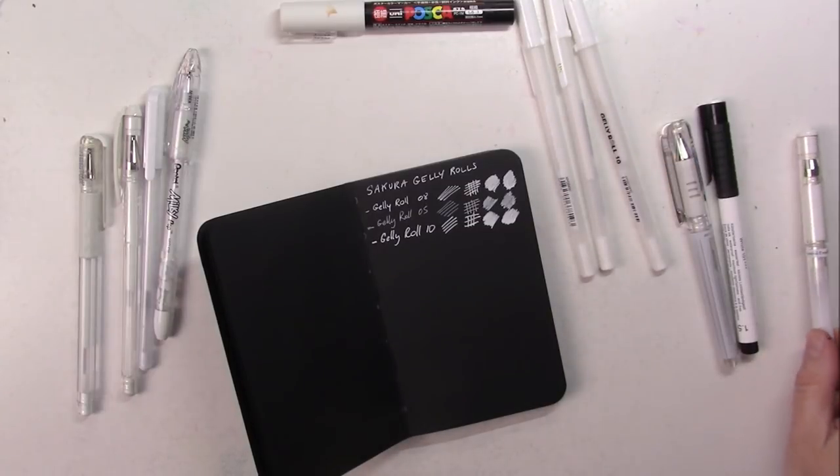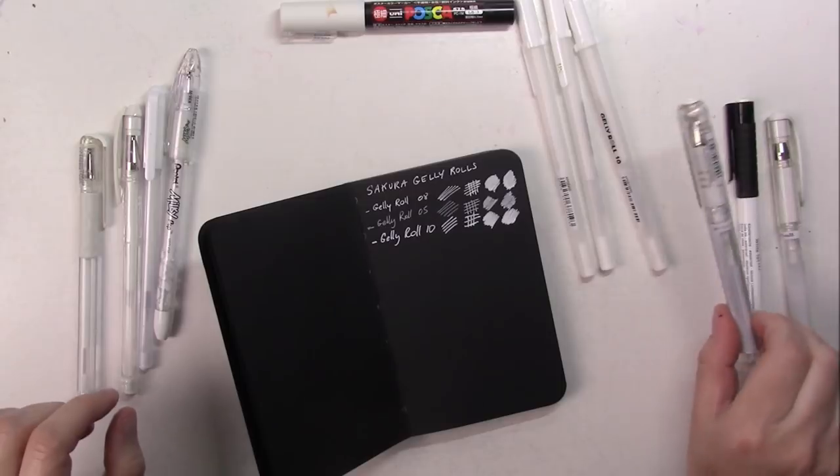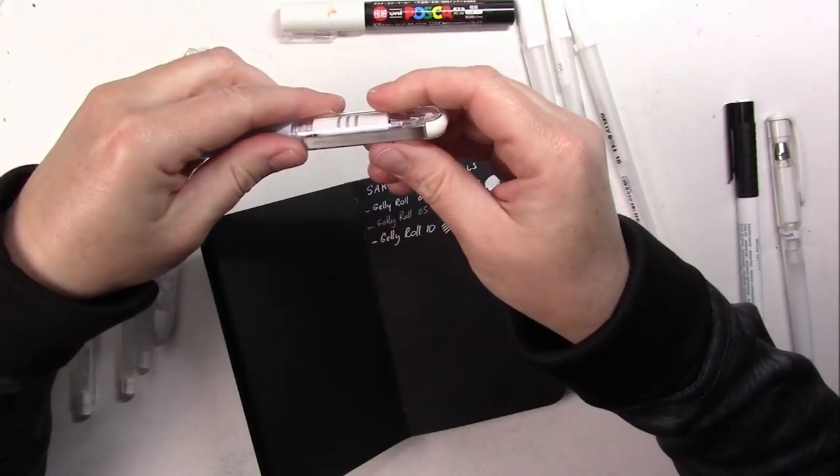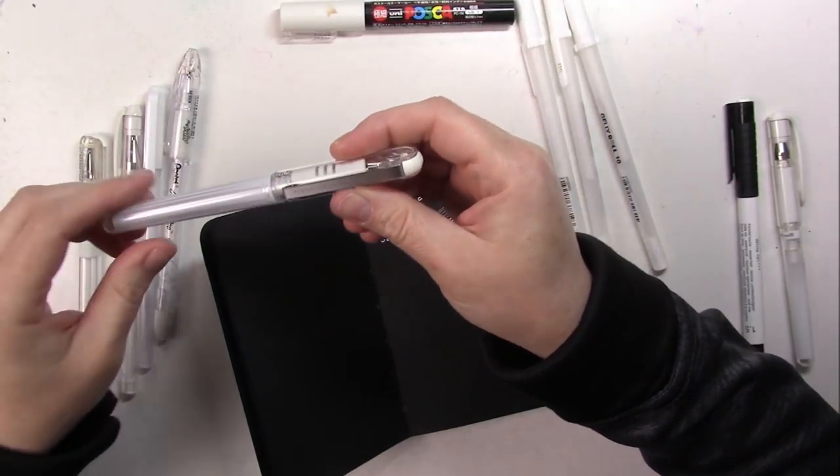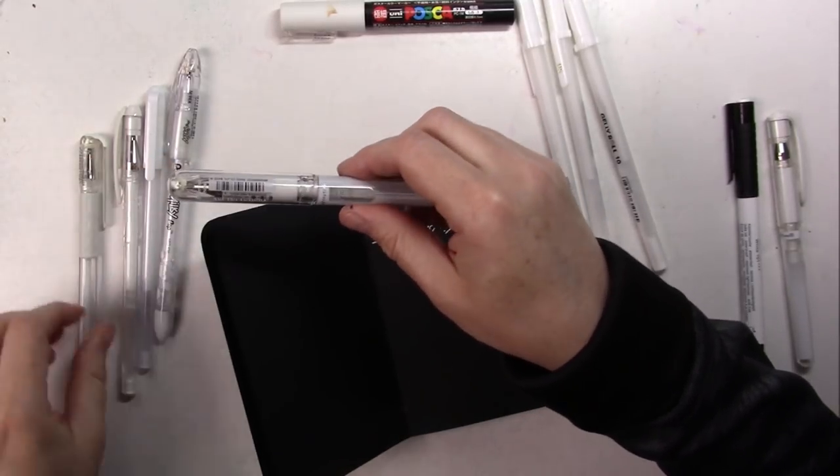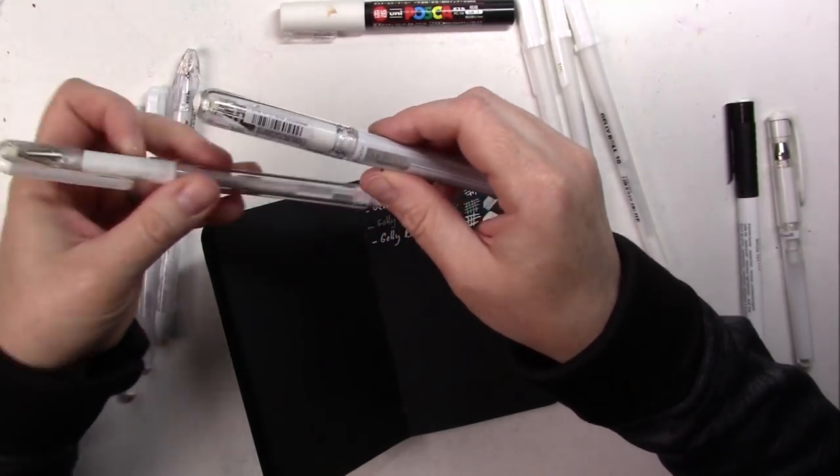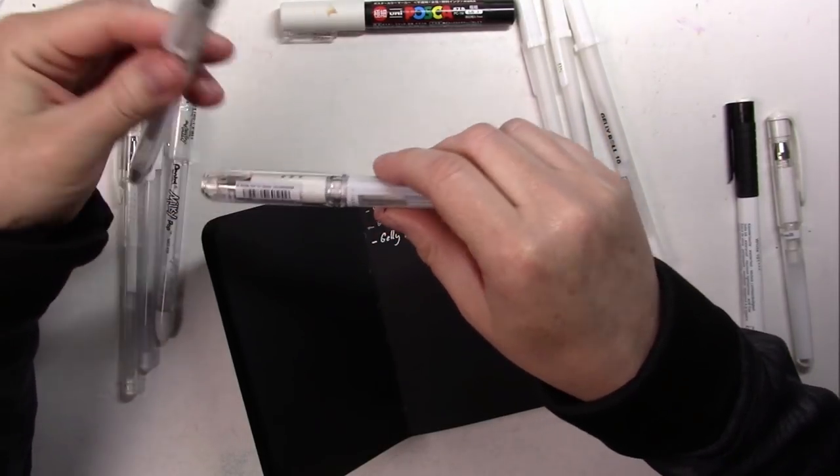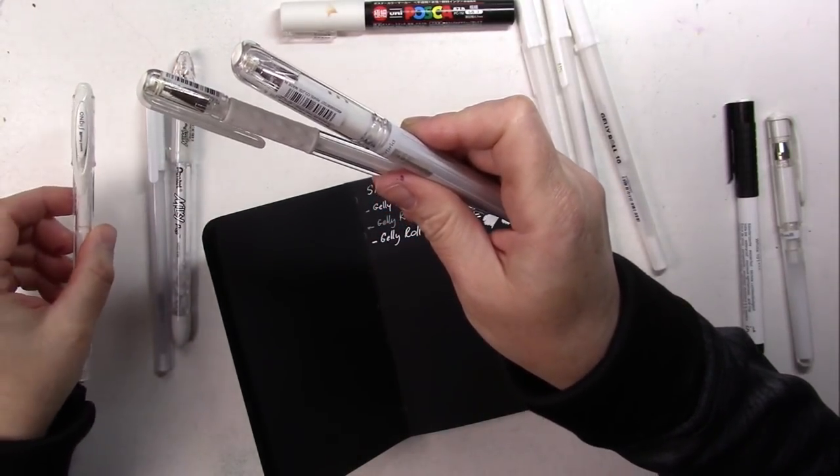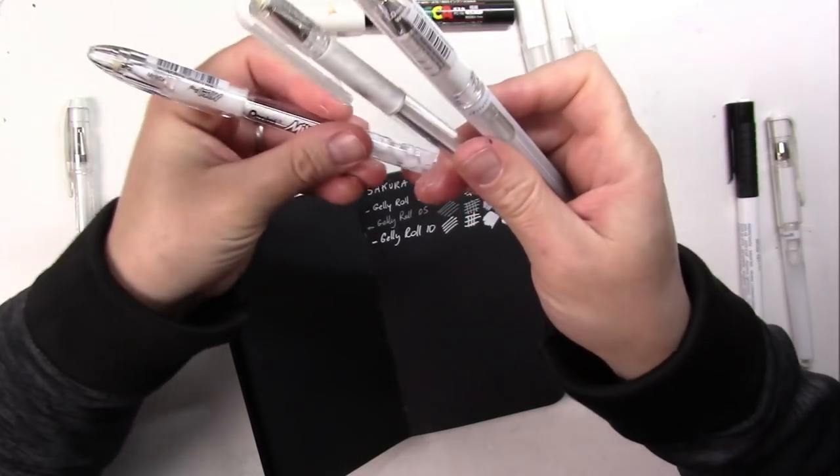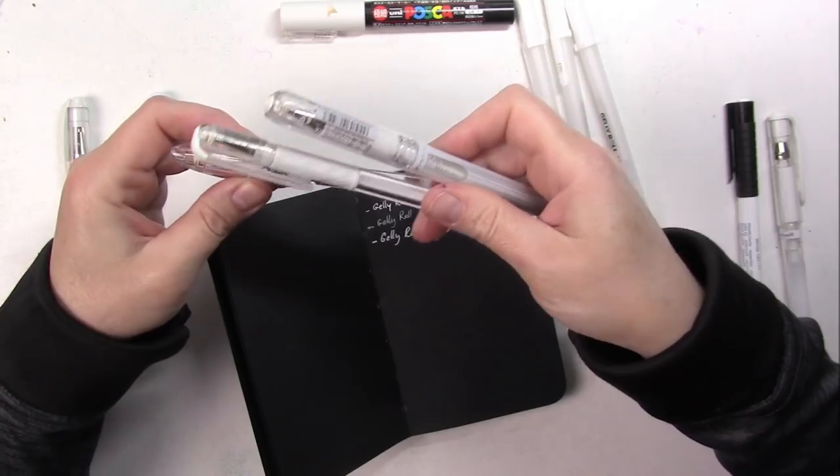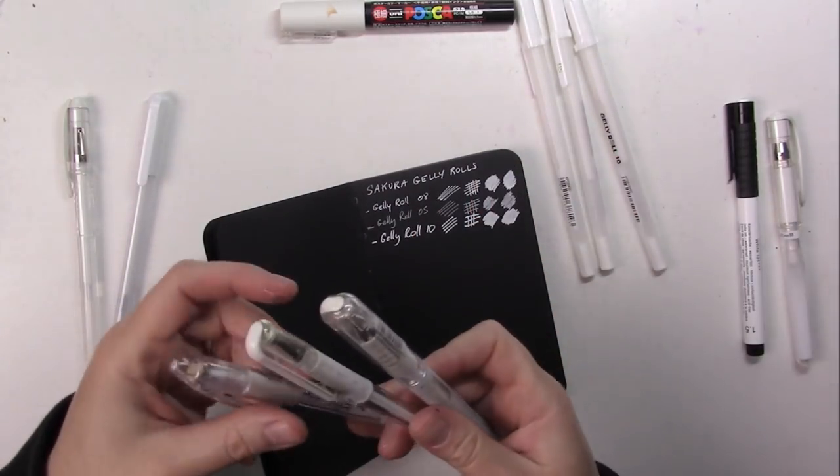Then we have the Pentels. I have a few of them. I've got the Hybrid Gel and this one is called the Grip Hybrid Gel Grip, this is a medium one. Then we have the Hybrid Gel Grip here also which is a thinner one, and one that I just recently bought which is the Pentel Milky Pop.